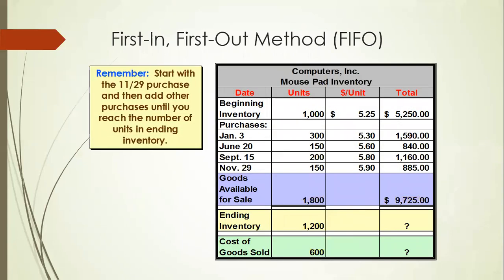Next is FIFO — First In, First Out. Using FIFO, you need to sell 600 units. In this method, the first units that came in are the first to go out. From the beginning inventory of 1,000 units, we sell the first 600 units. The remaining figures — 300, 150, 200, and 150 — remain in your ending inventory.